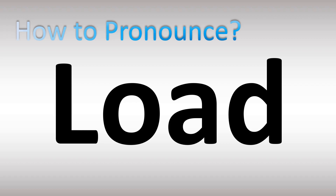We are looking at how to pronounce this word and more confusing vocabulary in English. Let's break down how to say this one: 'load.' You pronounce 'low' just like the adjective — the opposite of high — l-o-w, then you just add a 'd' sound: 'load.' Both British and American English pronounce it similarly.